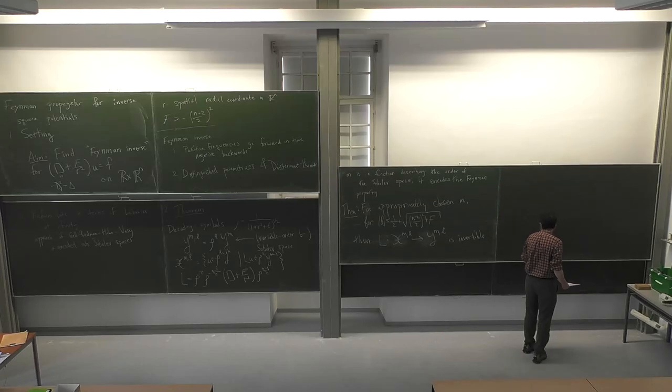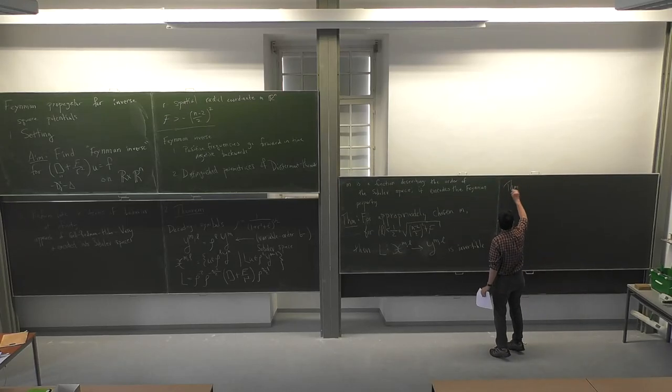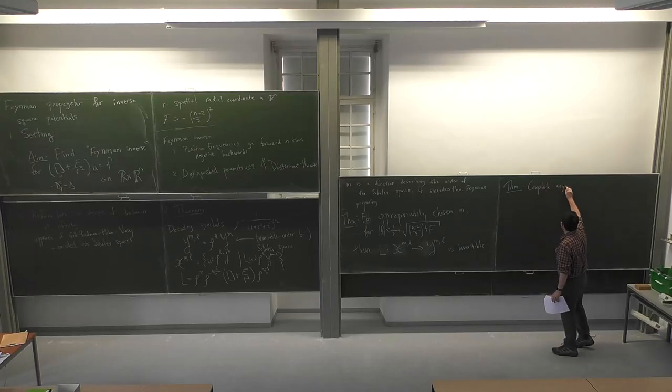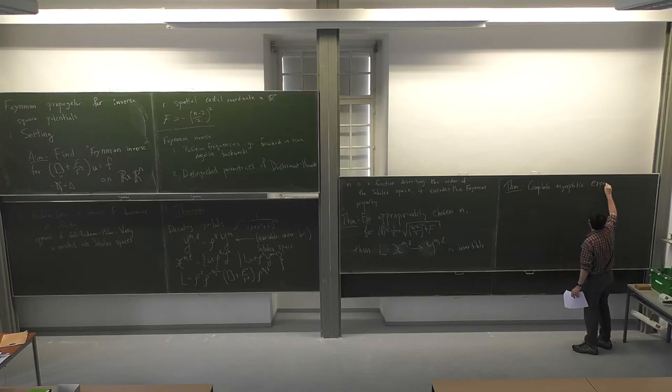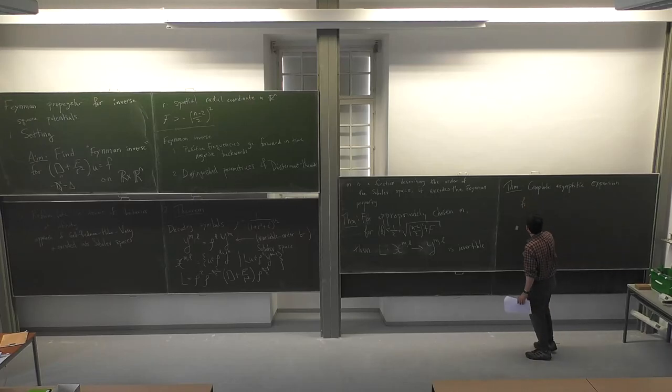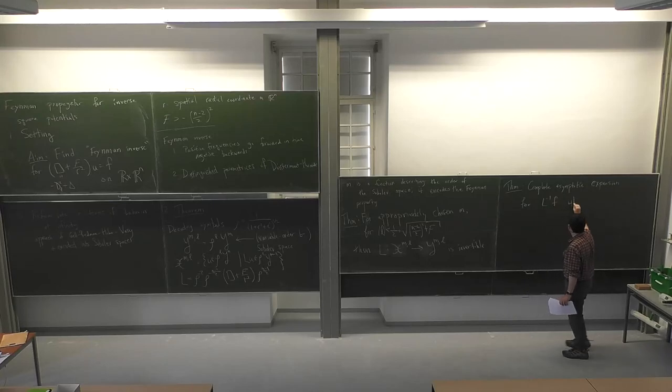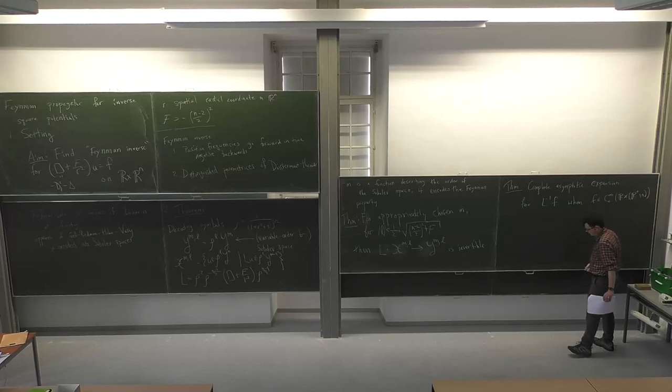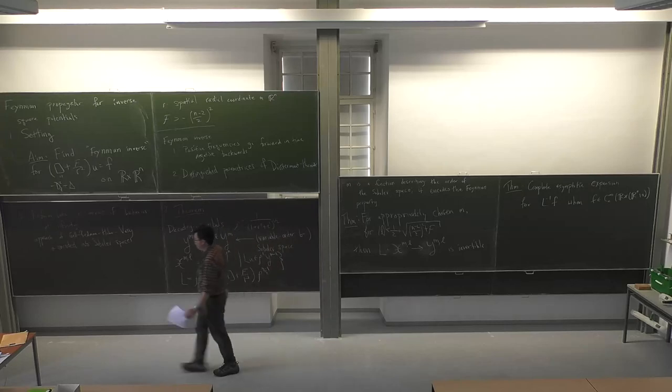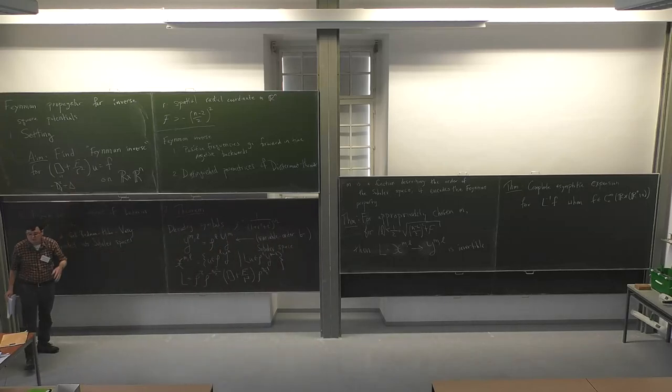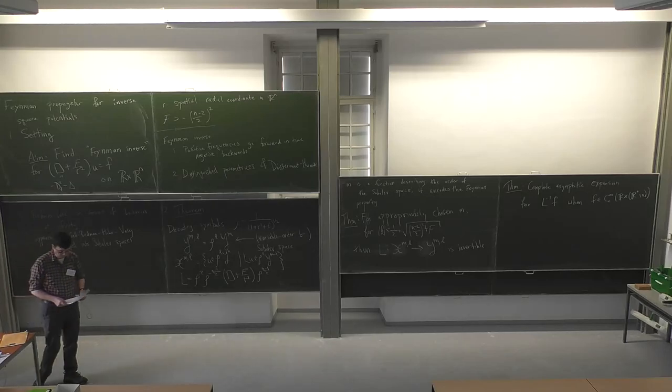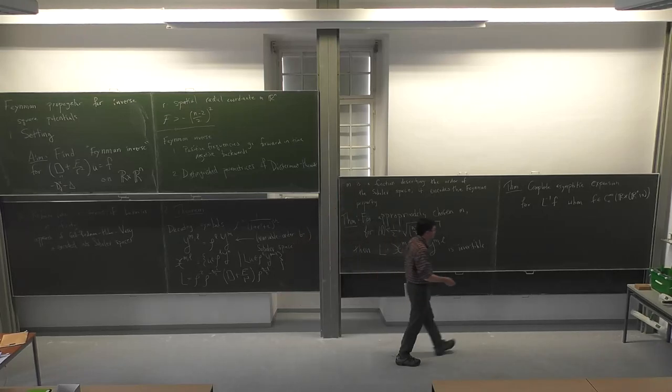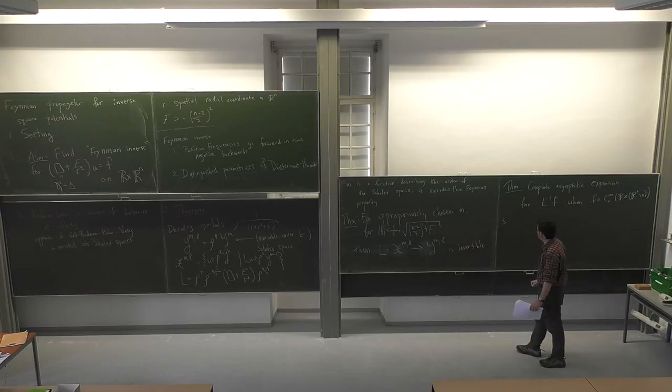So that's the sort of main initial theorem. And because in some sense I am who I am, it comes with the sort of other corollary, which is that there's a sort of as a complete asymptotic expansion for this inverse of F when F is as nice as it can possibly be. If you have some smooth compactly supported F that's supported away from the singularity of the potential, then you can describe completely the asymptotic behavior of the Feynman inverse. And to do that, and to also say more about what this m is, I have to draw a few pictures.